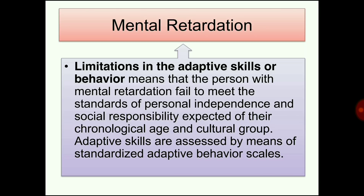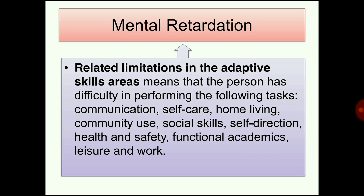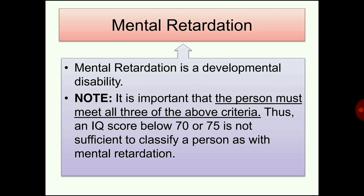Adaptive skills are assessed by means of standardized adaptive behavioral skills. Limitations in adaptive skill areas means the person has difficulty in tasks like communication, self-care, home living, community use, social skills, self-direction, health and safety, functional academics, leisure, and work. Mental retardation is a developmental disability and the person must meet all three criteria. Having an IQ score below 70 or 75 is not sufficient alone to classify a person with mental retardation.